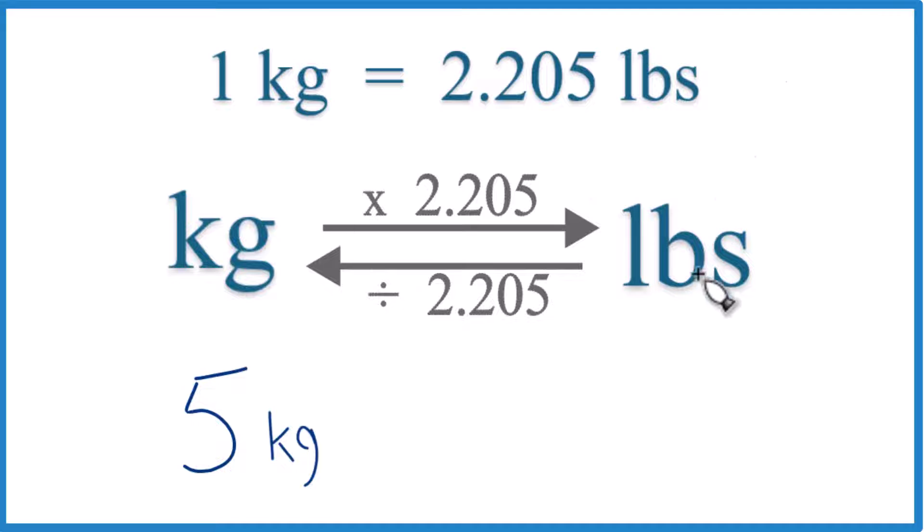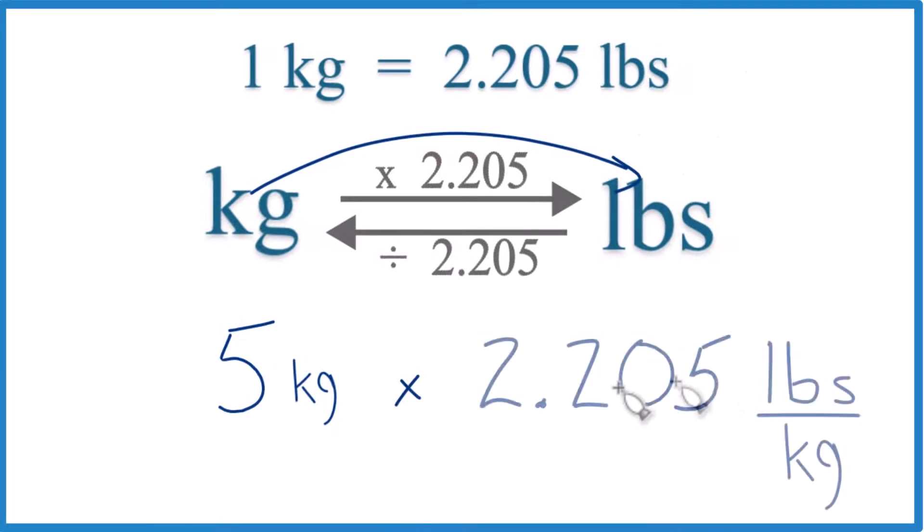We have 5 kilograms and we want pounds. So we're just going to multiply by 2.205, like this. And you can see it's 2.205 pounds per kilogram. That's what comes right here from our conversion factor.